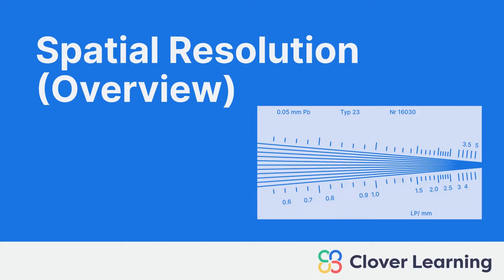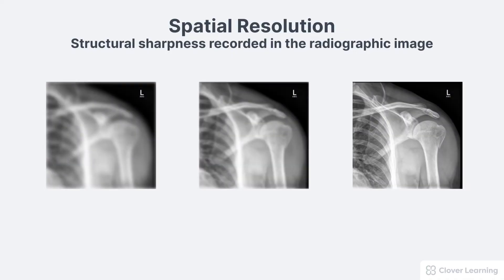Hey everybody, welcome back. This lesson is about spatial resolution in radiographic imaging. Spatial resolution is an important quality factor. It is defined as the structural sharpness recorded in the radiographic image.